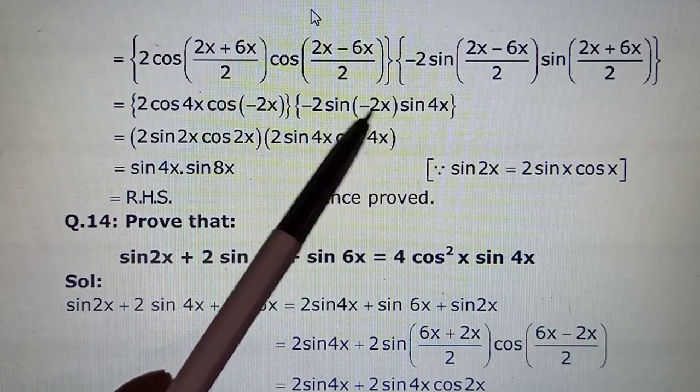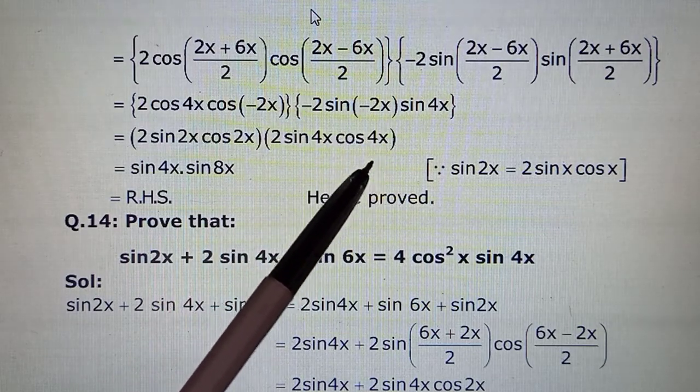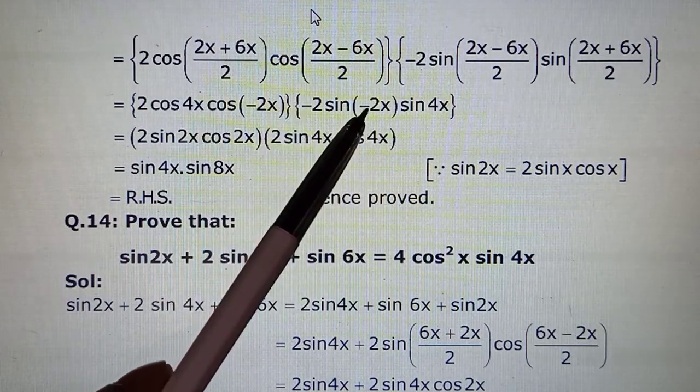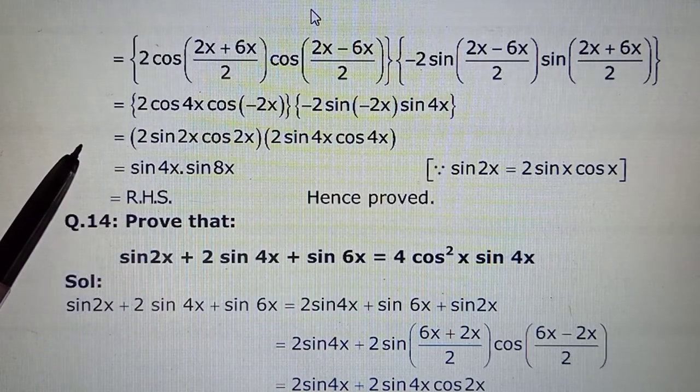And then here likewise. This will become now sin(-2x). But sin(-2x) becomes -sin 2x. Sin is negative in last quadrant. So this minus and a minus from here will make this also positive. So we are left with no negative sign.